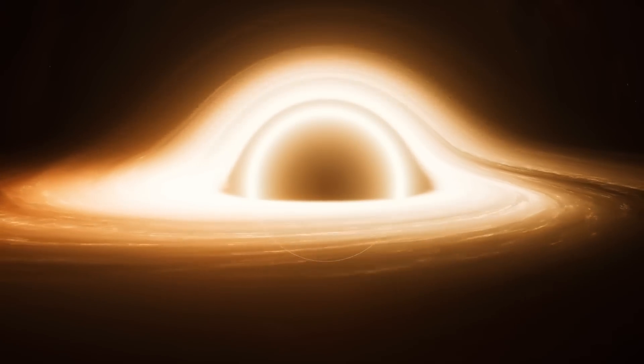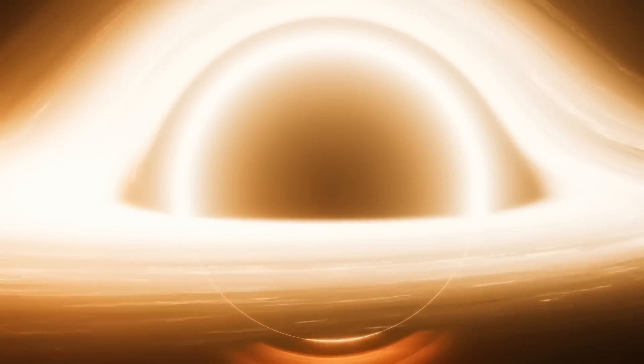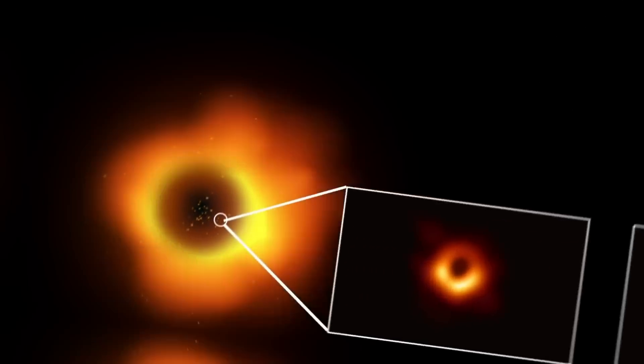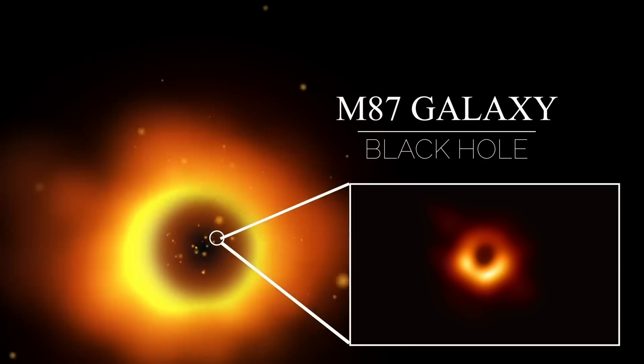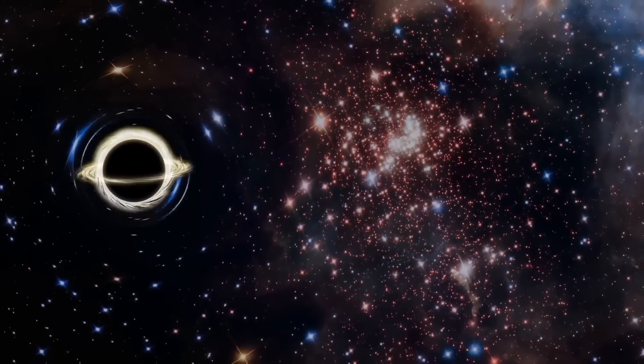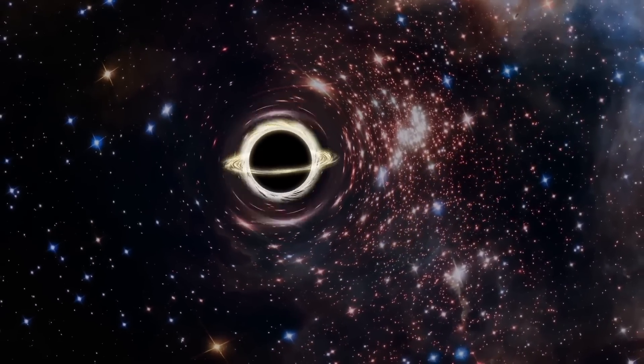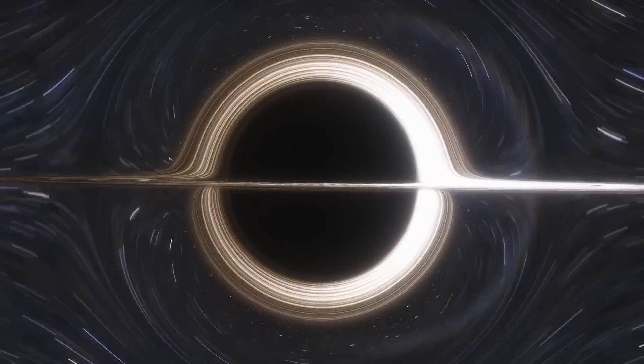Oftentimes, people think about black holes as these gargantuan structures that form from collapsed stars. There's a big one in the center of our Milky Way galaxy, weighs 4 million times that of the sun. The photograph of a black hole in the galaxy M87, 55 million light years away, billions of times the mass of the sun. But the reality is anything, if you compress it enough, becomes a black hole. If you take an orange and you squash an orange down sufficiently small, according to Einstein, it becomes a black hole. These things don't have to be gargantuan.